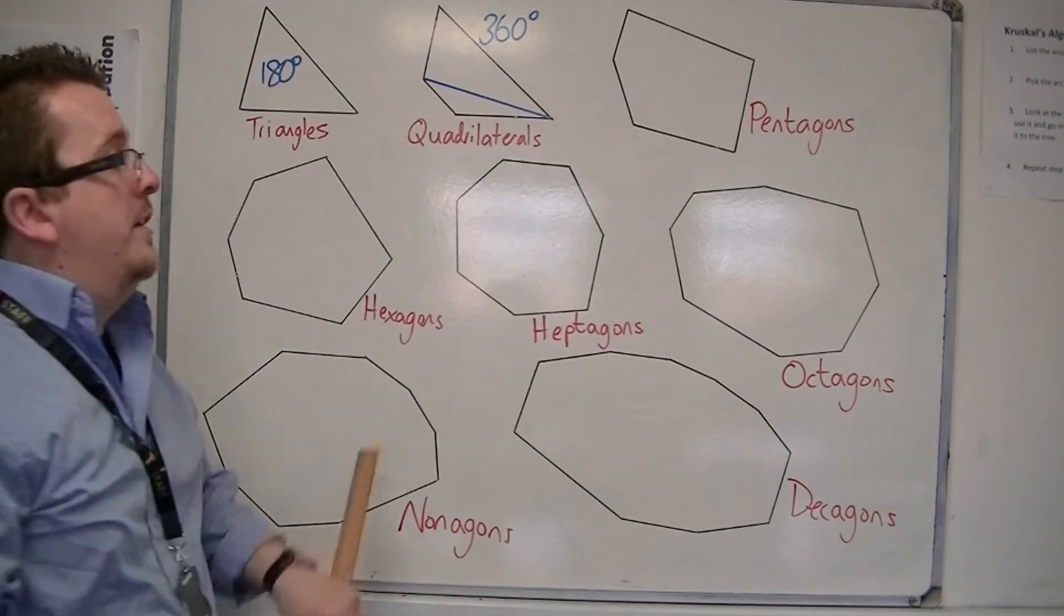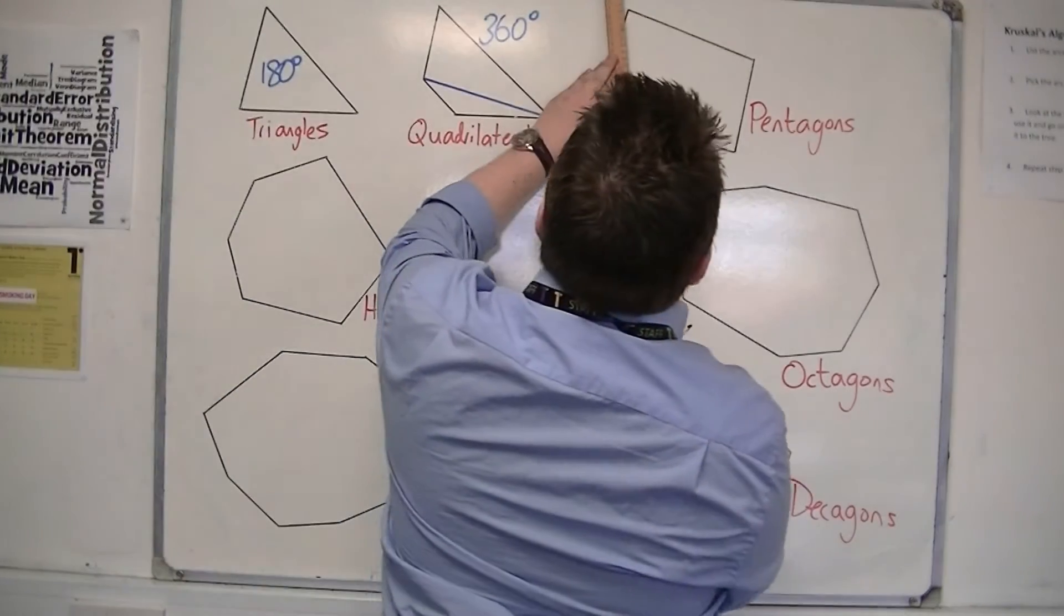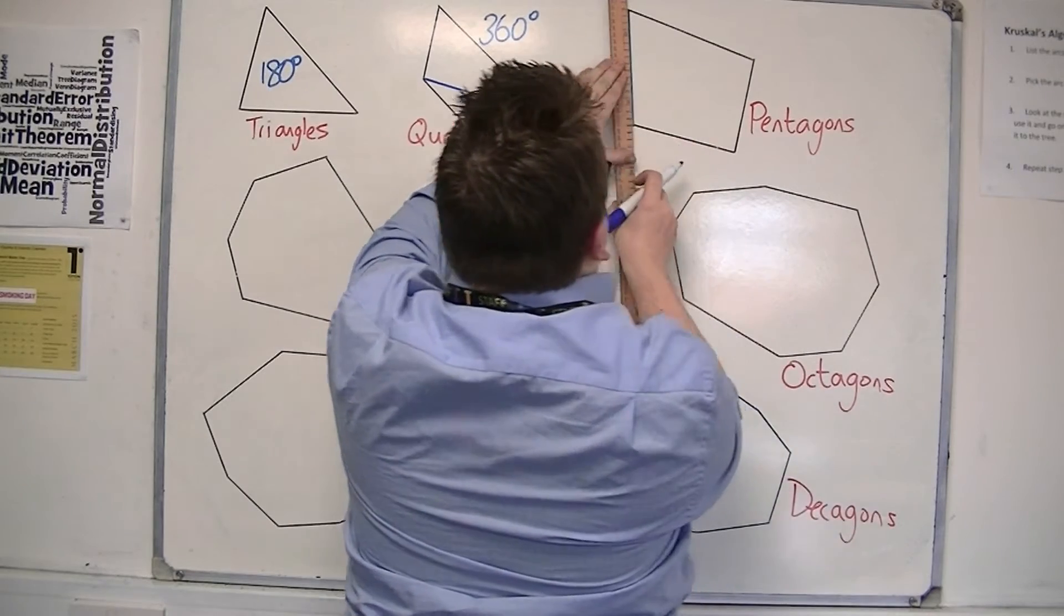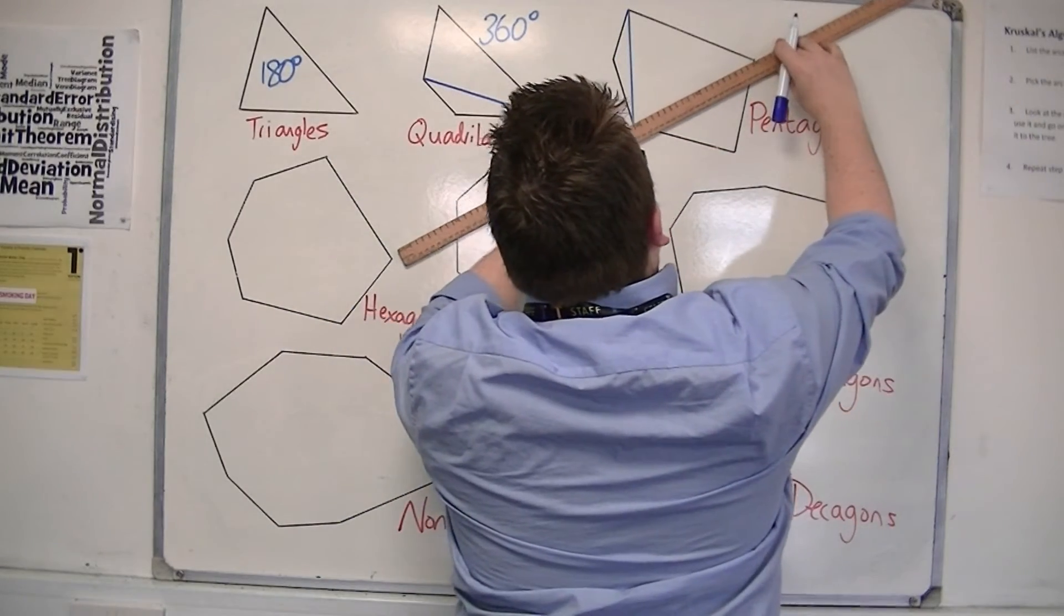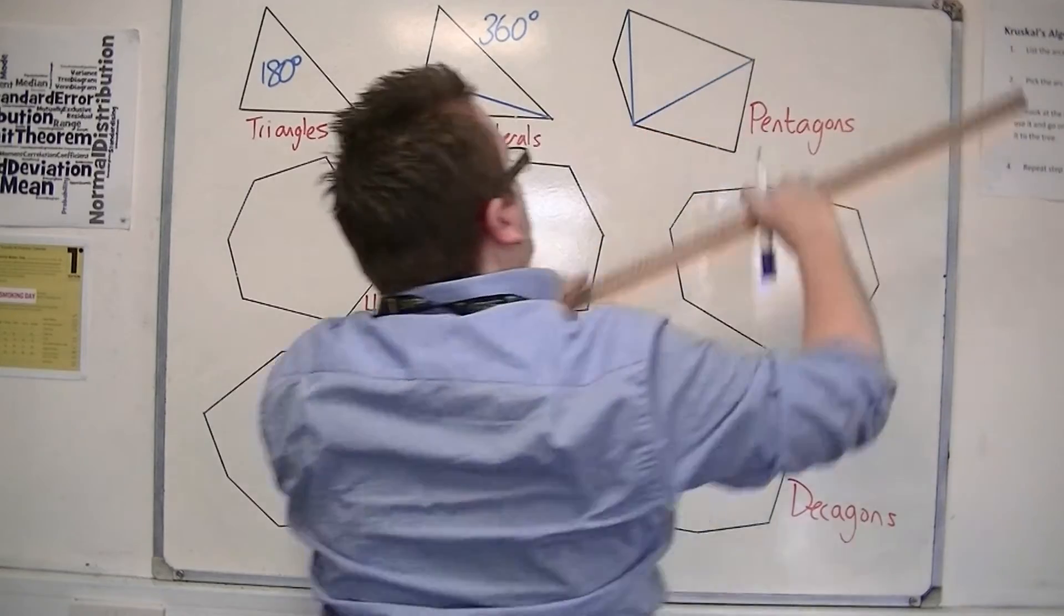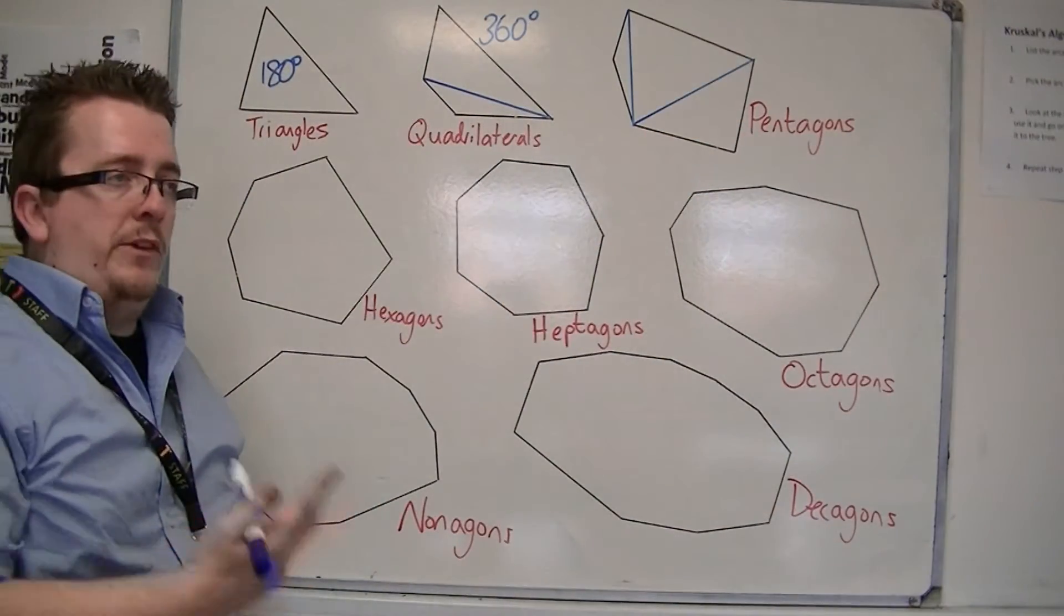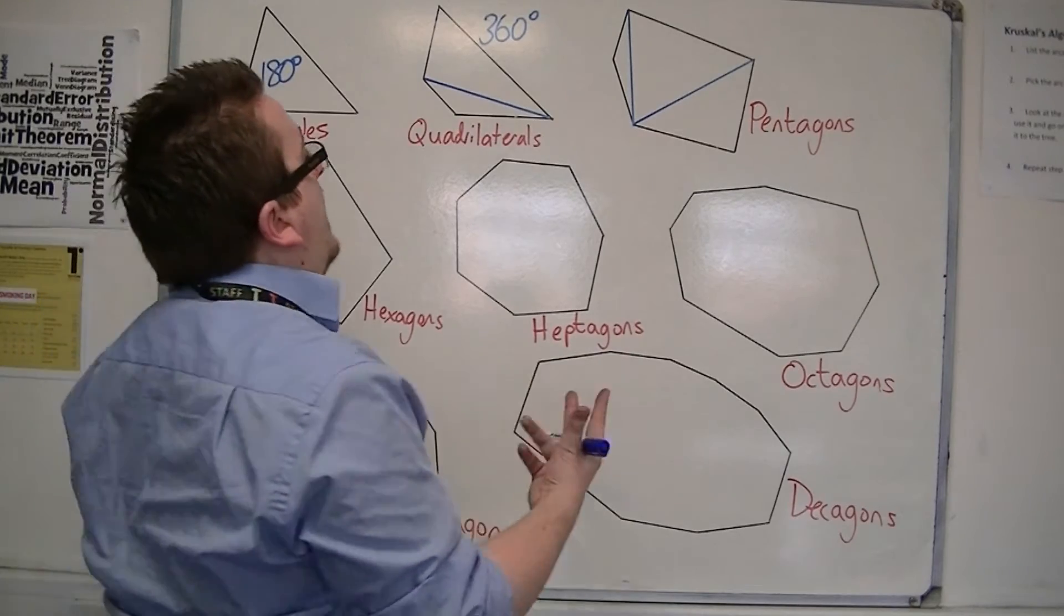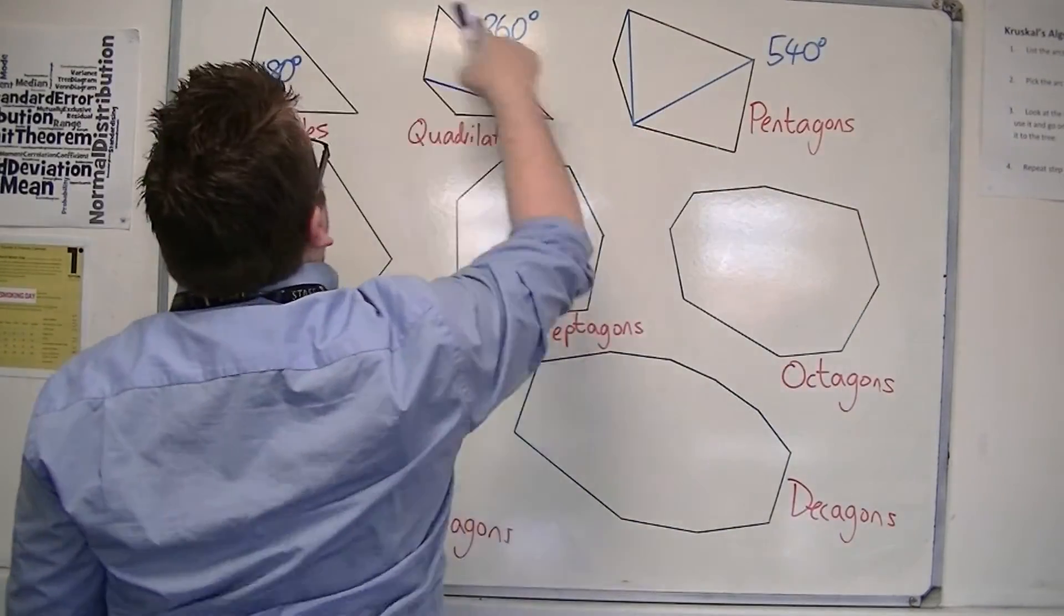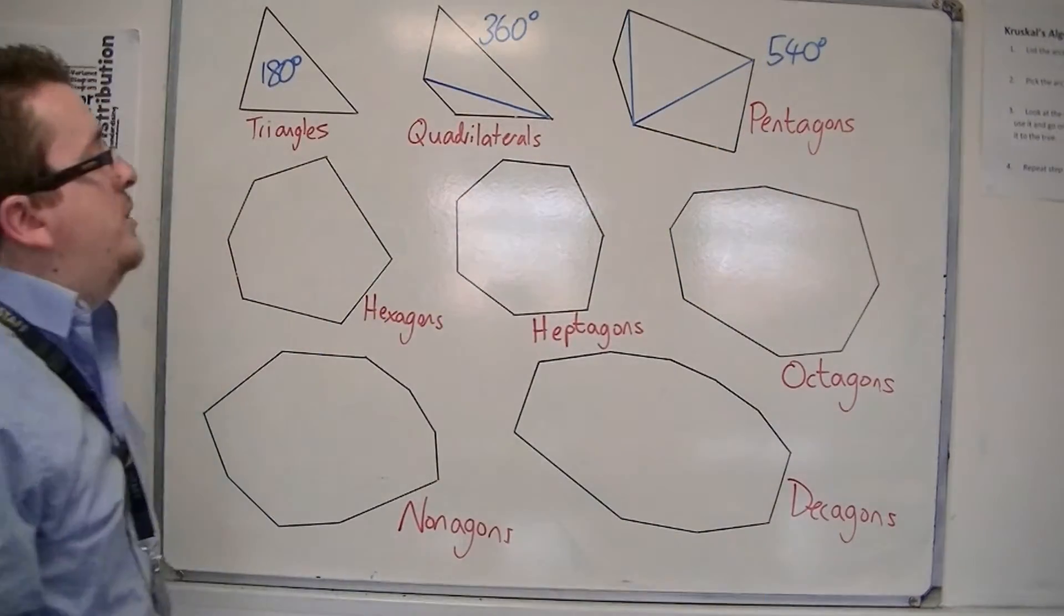For a pentagon, you can divide the shape up into three triangles. So that must mean that all of the angles inside must add up to 180 plus 180 plus 180, three triangles. So they add up to 540 degrees. So each time you're going to be adding on 180 degrees.